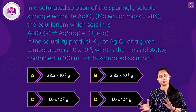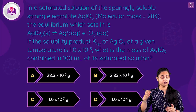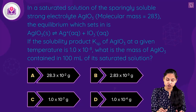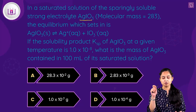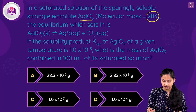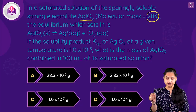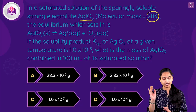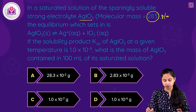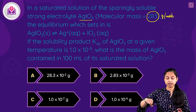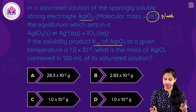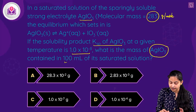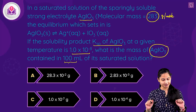The question is: in a saturated solution of the sparingly soluble strong electrolyte AgIO₃, whose molecular mass is 283 grams per mole, if the solubility product Ksp of AgIO₃ at a given temperature is 1×10⁻⁸, what is the mass of AgIO₃ contained in 100 ml of its saturated solution?